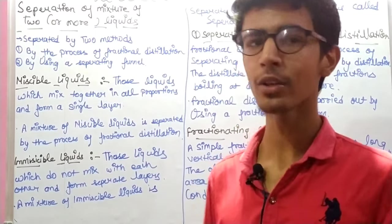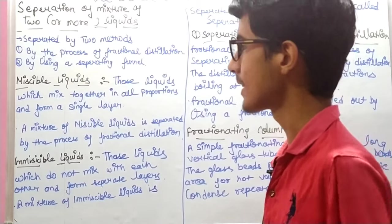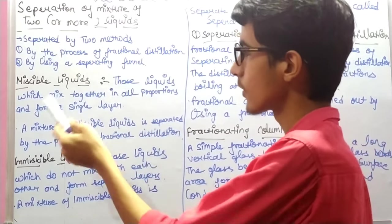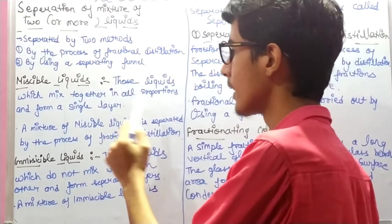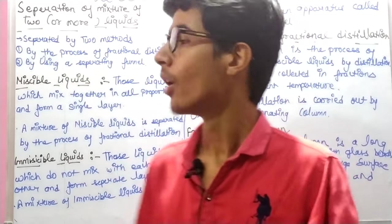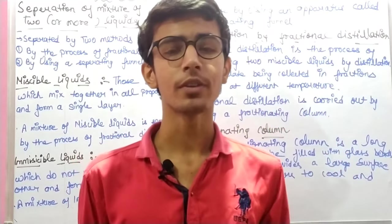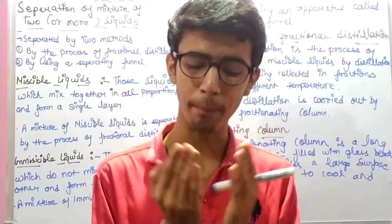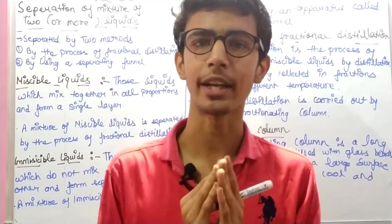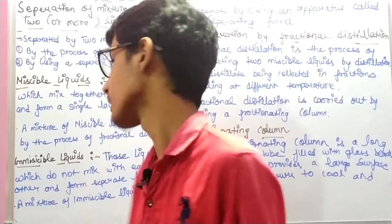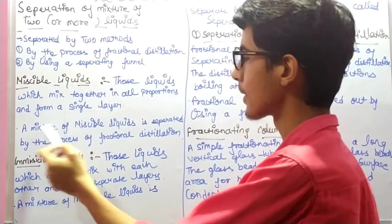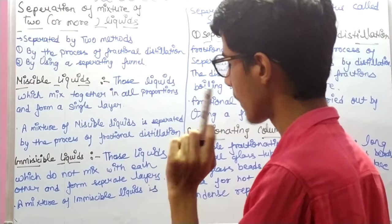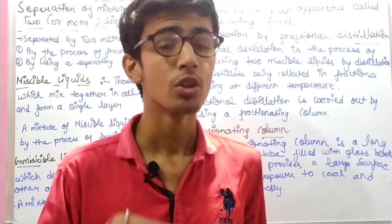First, we will understand some things. It starts with miscible liquids. Miscible liquids are those liquids that mix together in all proportions to form a single layer. Those liquids mix in any proportion and they will mix to form a homogeneous mixture.